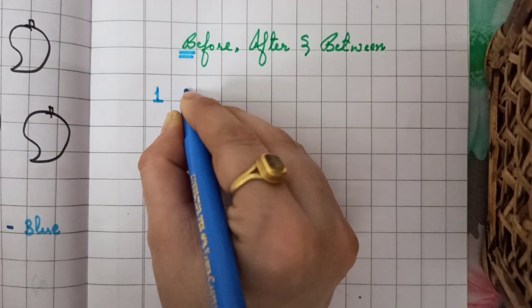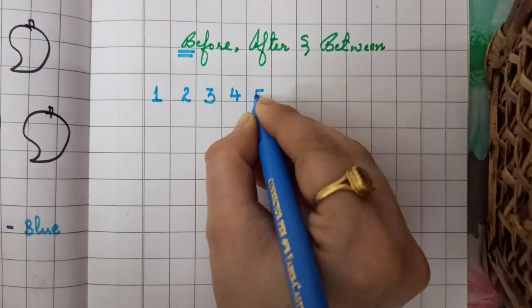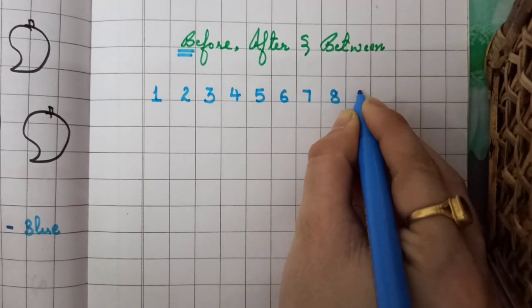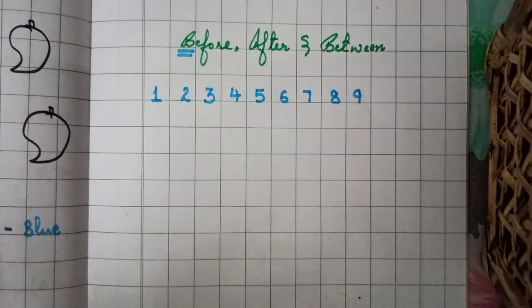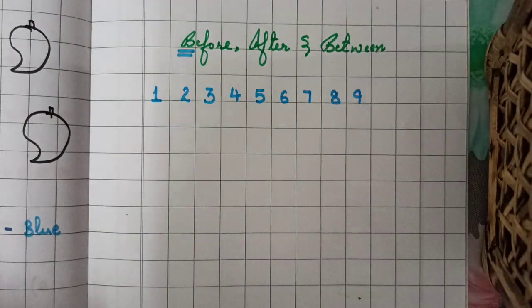So, 1, 2, 3, 4, 5, 6, 7, 8, 9. So now we are taking, first I will take after, because it is easy for kids.